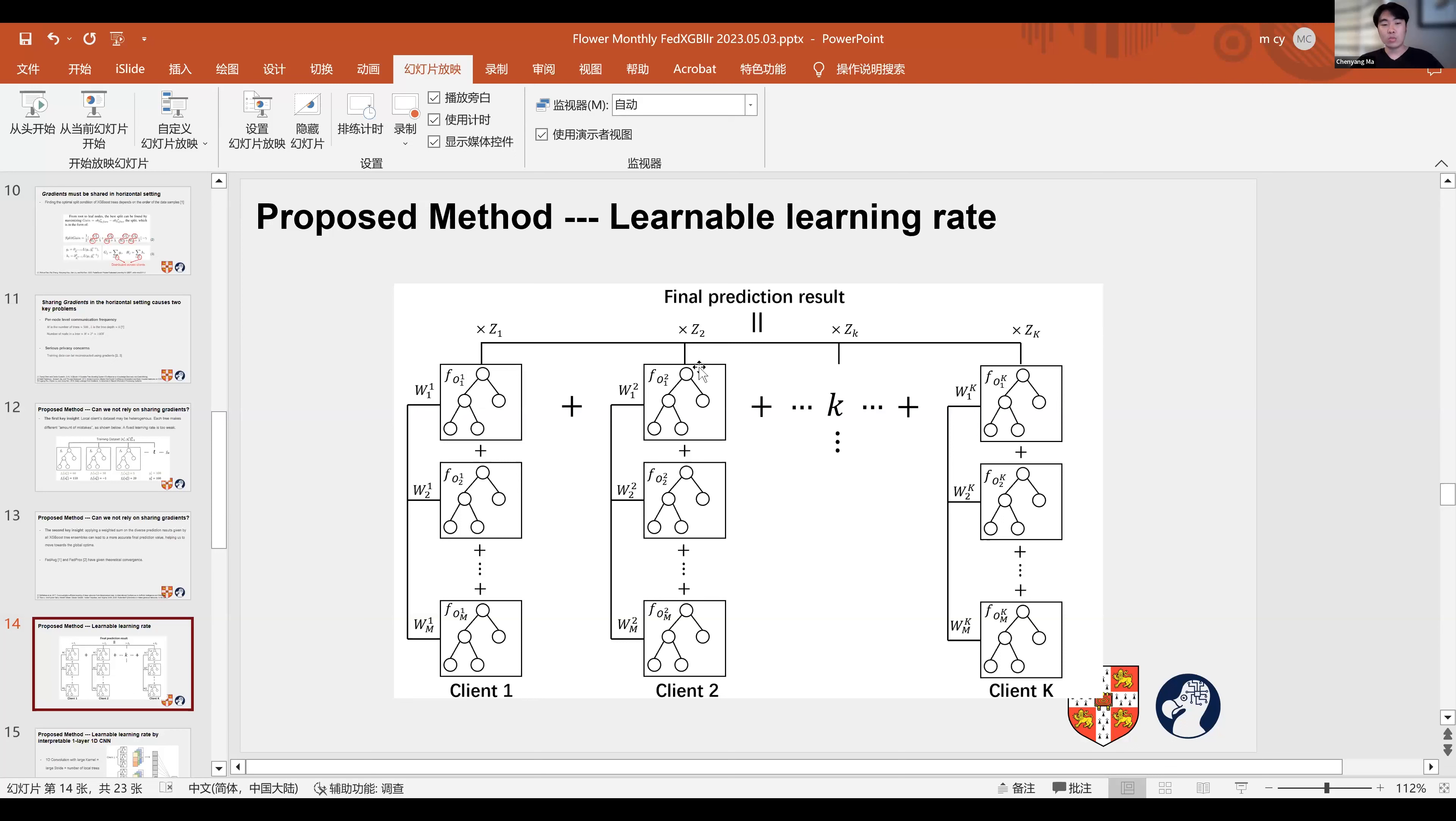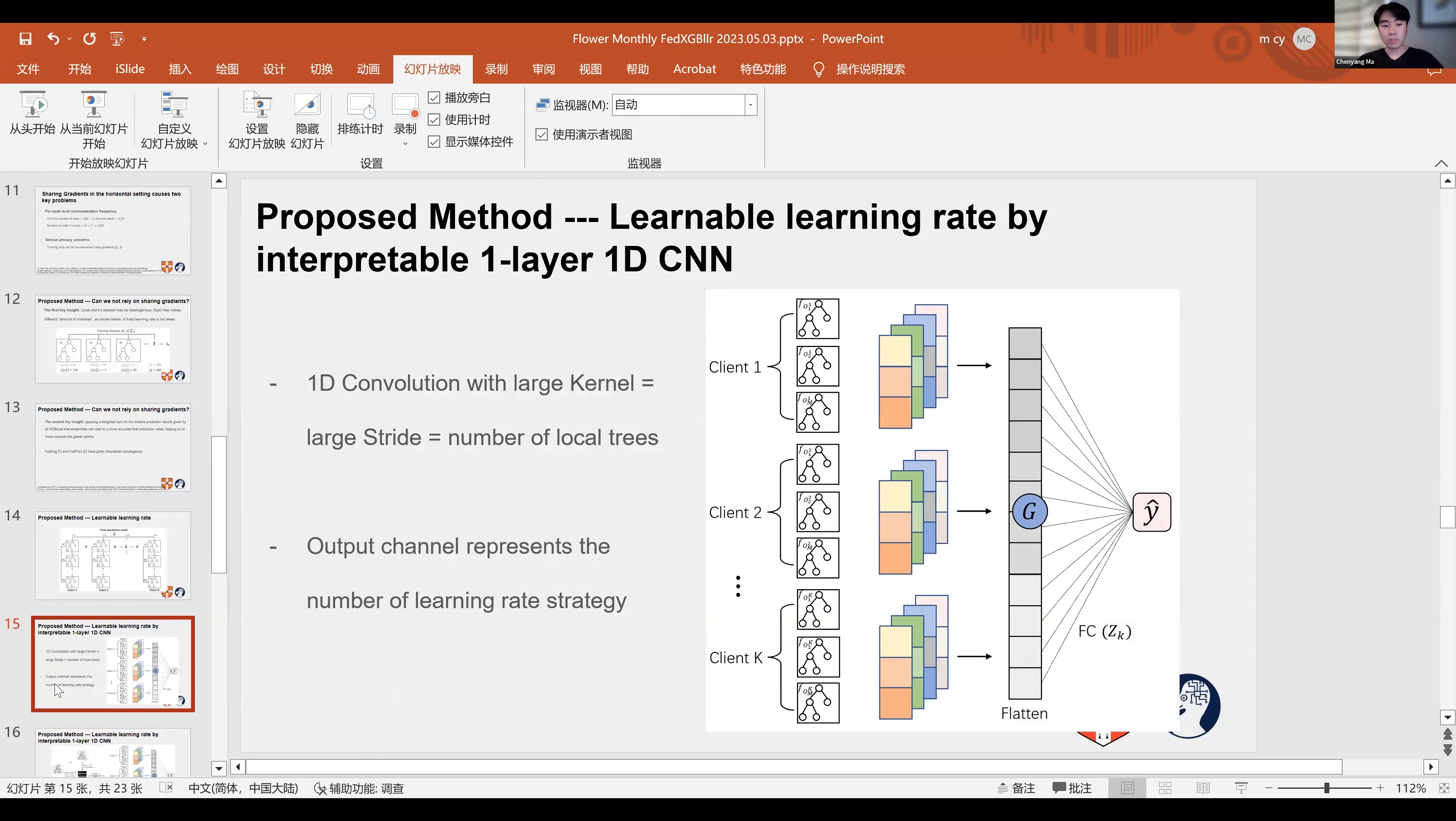How do we make the learning rates learnable during training? We can make this possible by transforming the aggregated tree ensemble into a one-layer 1D convolutional neural network. In the first 1D convolutional layer, the inputs are the prediction outcomes of all tree ensembles. The kernel size and stride equal the number of trees in each client's tree ensemble. Thus, each channel represents the learning rates that can be applied. The classification head, which is a fully connected layer, contains the weighting factor ZK to balance the prediction outcomes of all clients' tree ensembles.